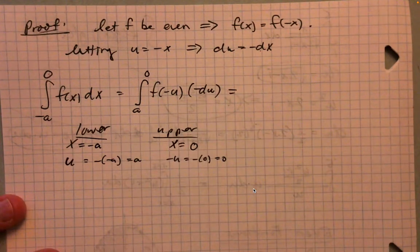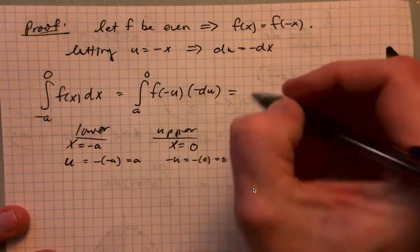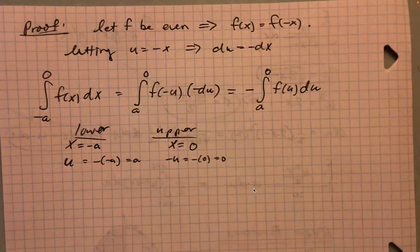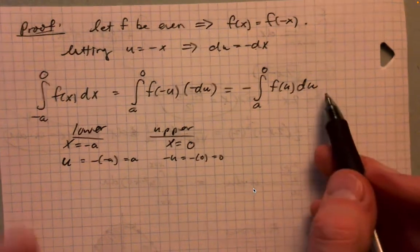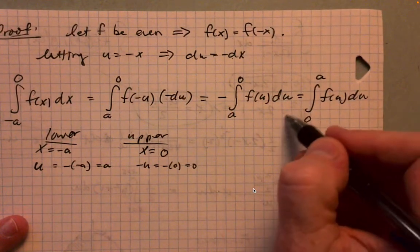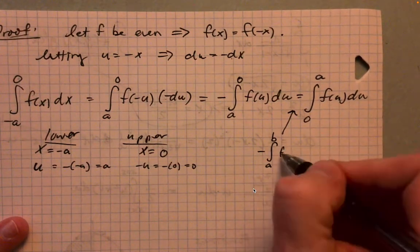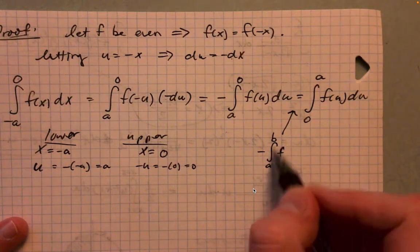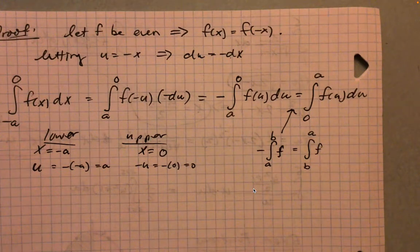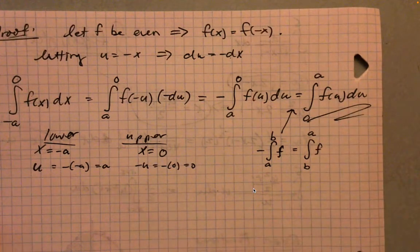And so then I can kind of deal with these negatives. So f of negative u is just f of u, and then this other negative comes out. So this would actually be equal to negative the integral from a up to zero of f of u du. And then I'm going to rewrite this as a positive integral from zero up to a of f of u du. Now what did I do here? Here I just used this fact from a couple sections back: that if I have the negative integral of f from a to b, that's equal to the integral from b to a of f. So the limits can flip and it changes the sign in front of the integral.